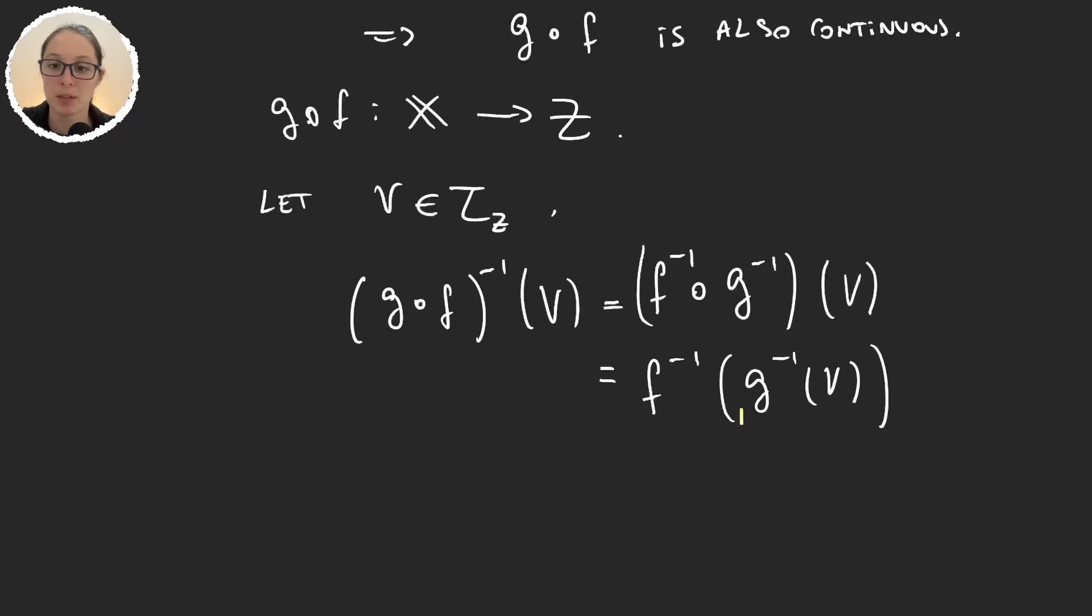But now because g is continuous and b is an open set in z, then g inverse of b is open. And so we're taking the preimage through f of an open set. So all this is also open. And so the preimage of b through the composition is also open, and then the composition is continuous.